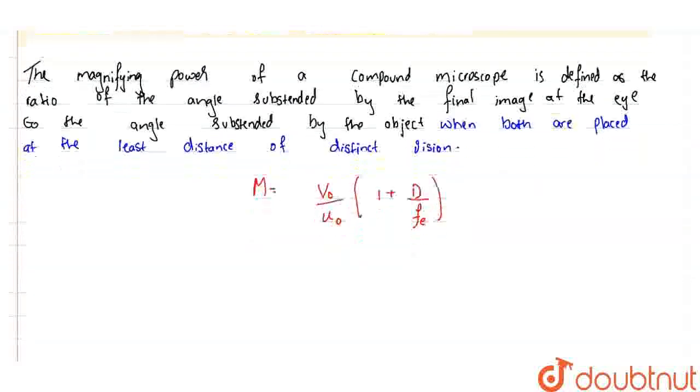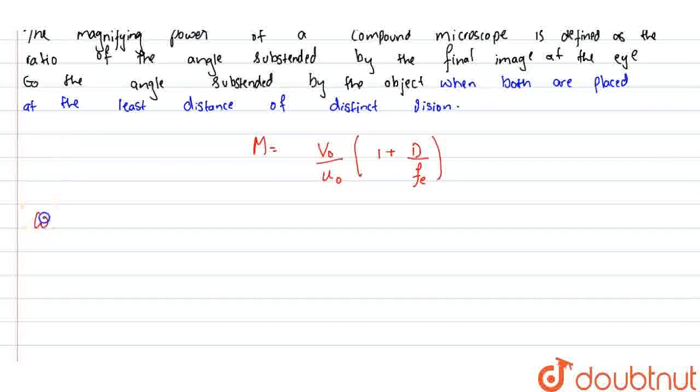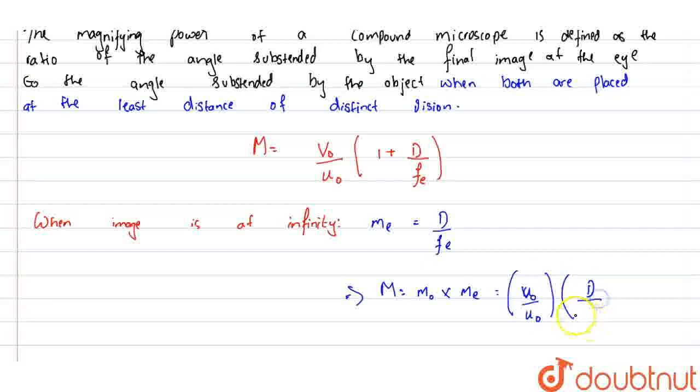When the image is at infinity, we get Me equals D by Fe, which translates to M equals Mo times Me, where Mo and Me represent the magnification of objective and eyepiece. This equals V0 by U0 times D by Fe. So it is the product of magnifying power of objective and eyepiece.